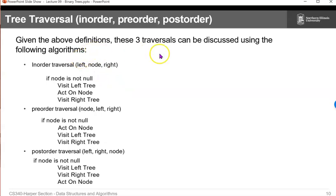Well, given the above definitions, these traversals can be discussed using the following algorithms. For an inorder traversal, if the node isn't null, visit the left tree, act on the node, visit the right tree. And we do this recursively.